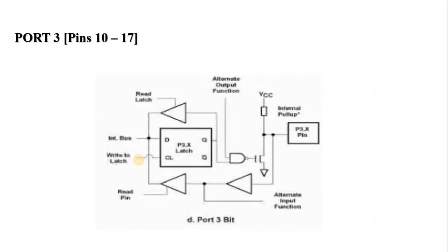Port 3 has address B0. The 3rd port of AT51 has a D-type latch, three unidirectional buffers, a FET with an internal pull-up resistor, and a NAND gate connected to the FET. Port 3 performs two main functions: just like port 2, port 3 can function as an input/output port, and it also has important alternate functions.